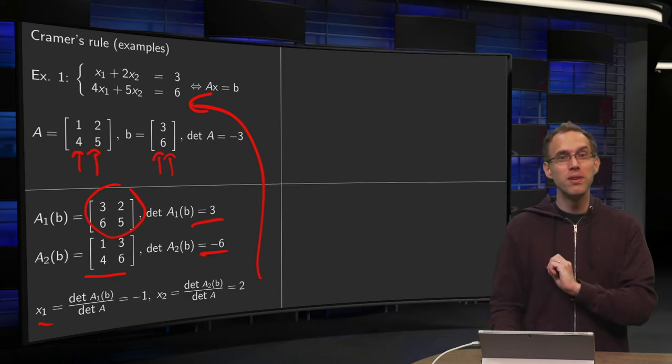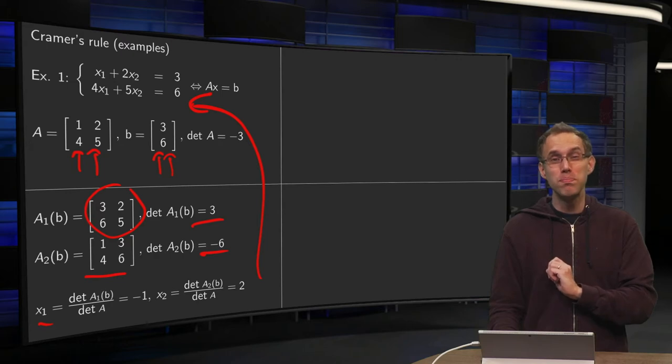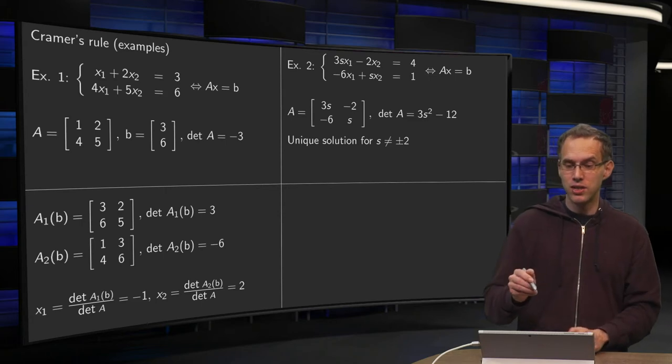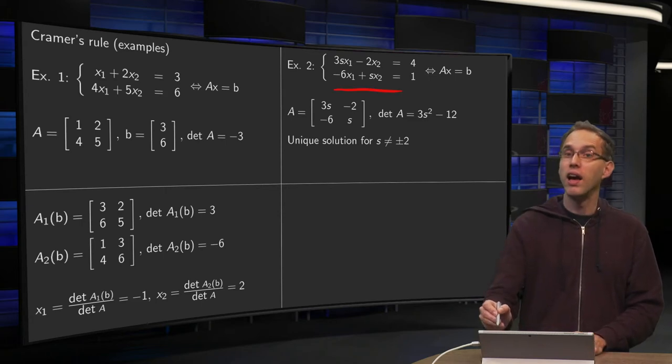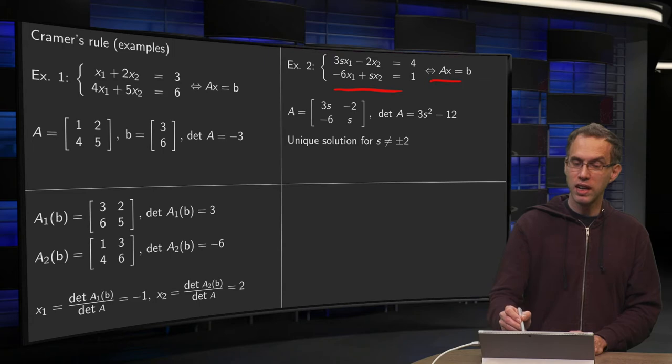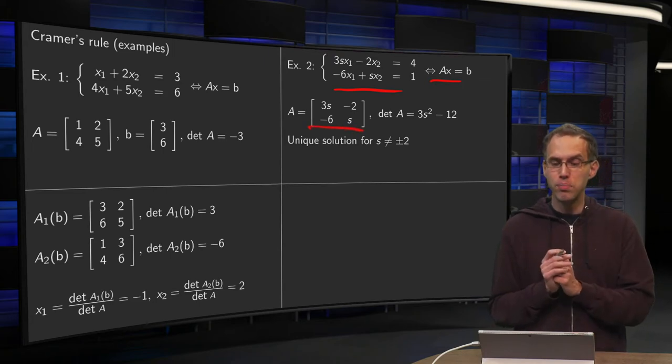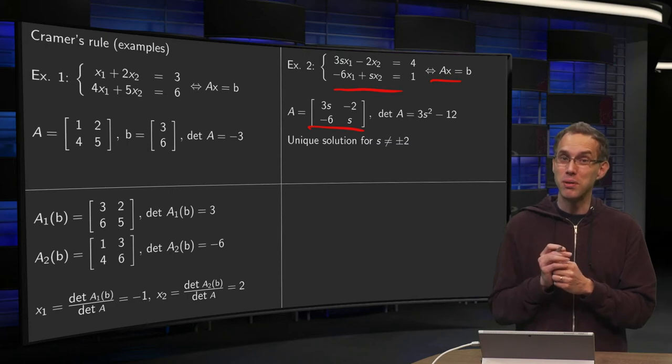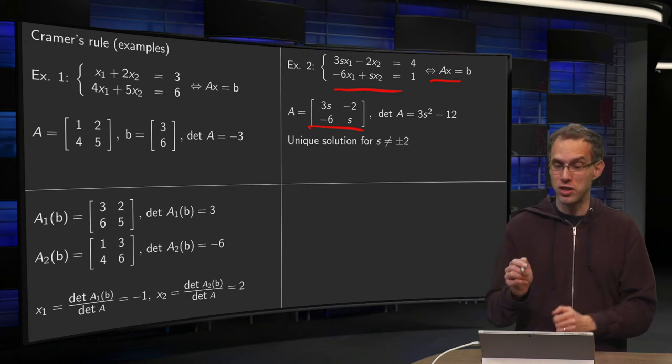Let's go to an example that is a bit more tricky, an example with a parameter, with a parameter S. So here we have our system. Again, it's equivalent to Ax equals b, where this is our matrix A. Now if we compute our determinant, we get 3S times S equals 3S squared minus minus 2 times minus 6. So that equals minus 12.